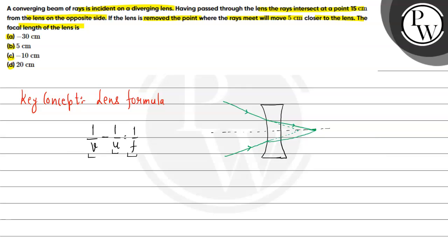This will be our point of intersection. Having passed through the lens, the rays intersect at 15 cm from the lens on the opposite side. If the lens is removed, the rays meet 5 cm closer to the lens. The point of intersection of the incident rays acts as the object for the lens.